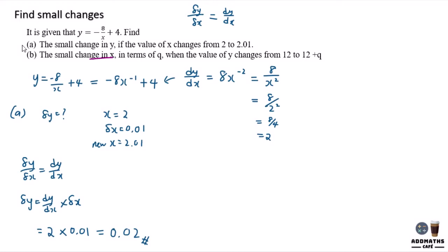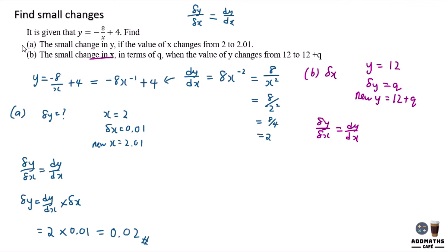For part (b), you are required to find the small change in x, which means finding delta x in terms of q, when the value of y changes from 12 to 12 plus q. So the change in delta y is q. To find delta x, rearrange the formula: delta x equals delta y times dx/dy.